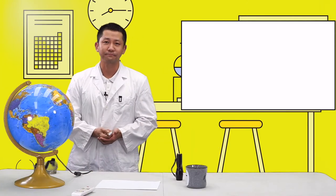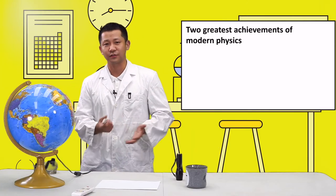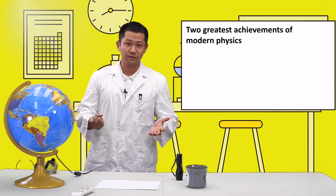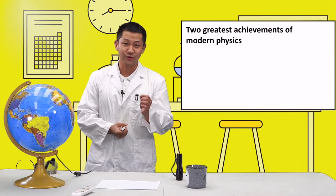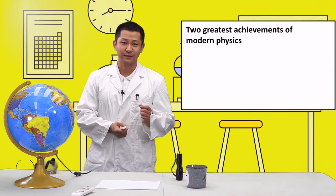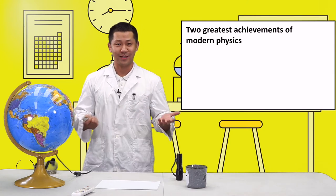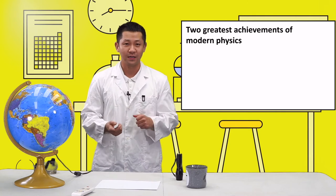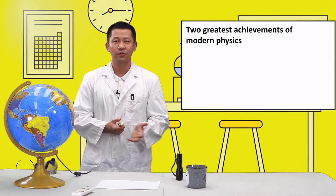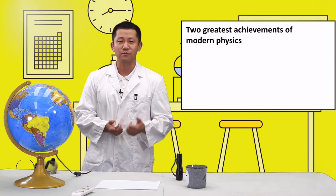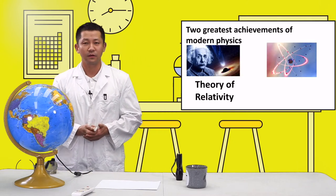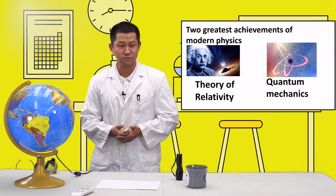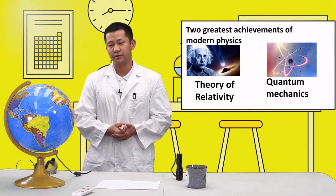But today I want to talk about two beautiful theories in physics. I'll try my best to use simple words to explain as clearly as possible. There are two great achievements in modern science: Albert Einstein's theory of relativity and quantum mechanics.